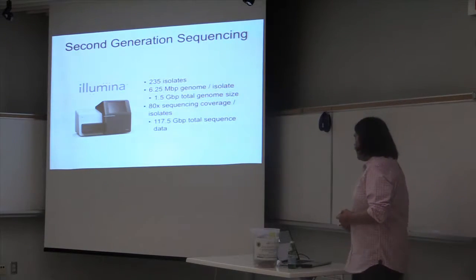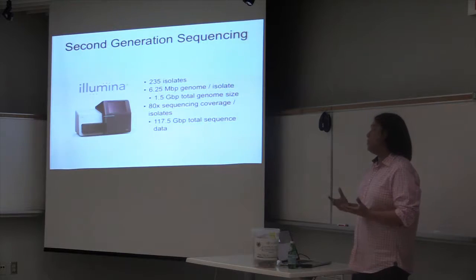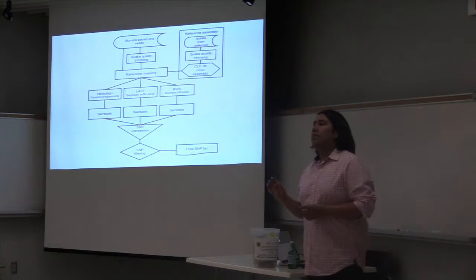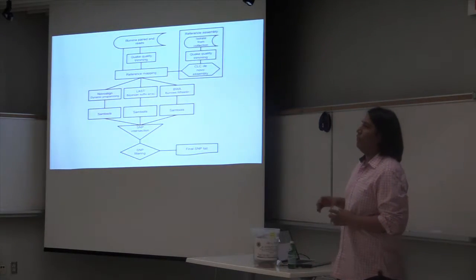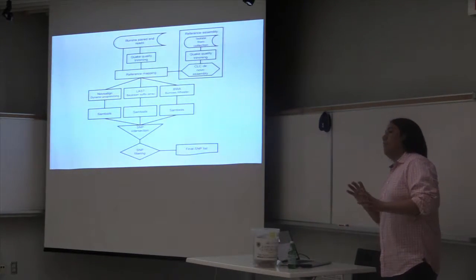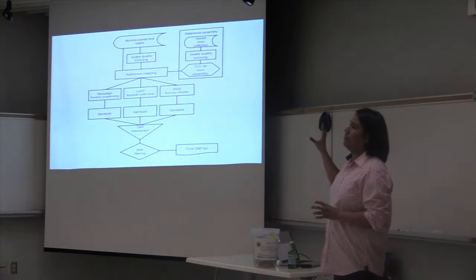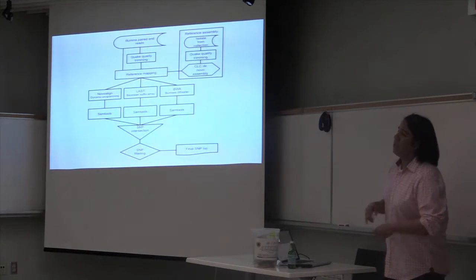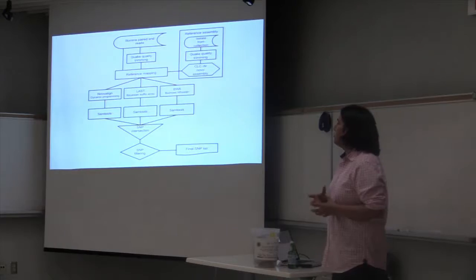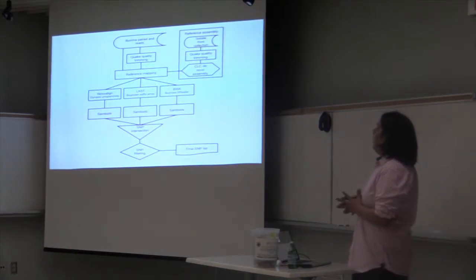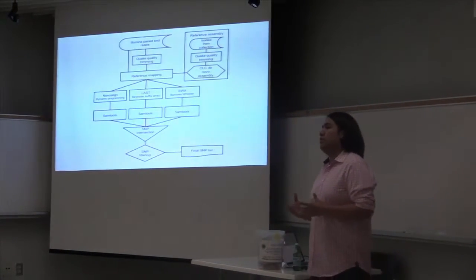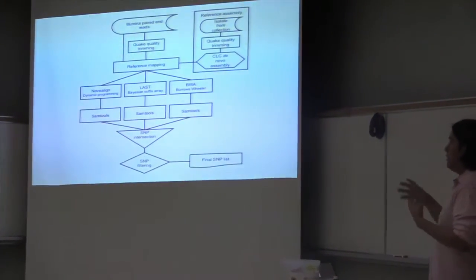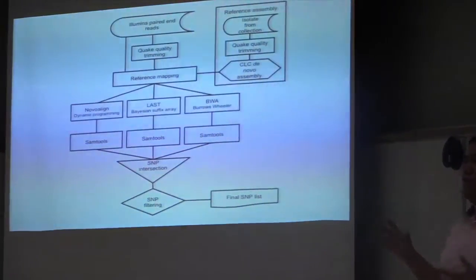In order to overcome these potential biases, I designed a pipeline that uses the best de novo assembled isolate from our collection, then we map the reads of all our isolates back to that reference, using three algorithmically different methods. In this case, I used BWA, that uses the Burrows-Wheeler transform, I used a Bayesian suffix array approach that's used by LAST, and dynamic programming, which is provided by Novoalign. The polymorphisms that were produced by this pipeline needed to be corroborated by these three algorithms.